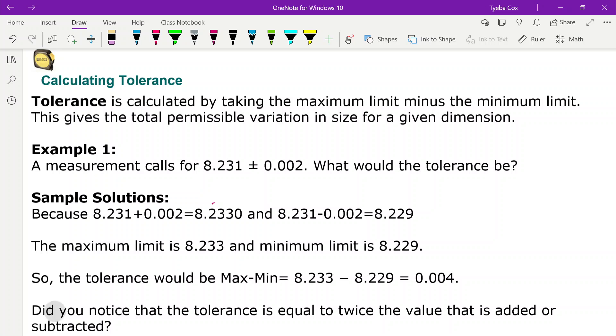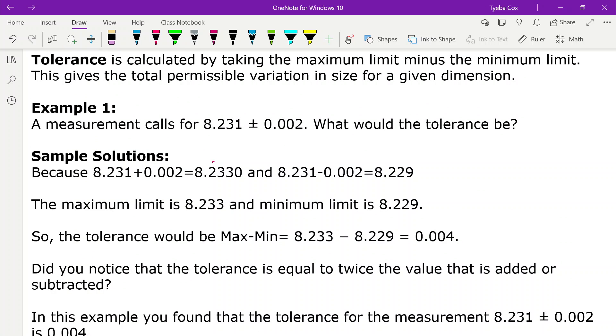So let's look at example one. The measurement calls for 8.231 plus or minus 0.002. What would the tolerance be? Okay, so there's two ways of doing this.